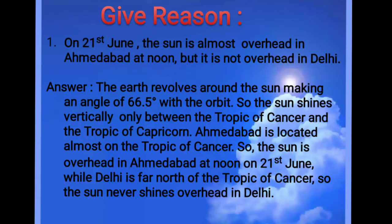When it comes to 21st June, the earth is positioned such that the Tropic of Cancer faces the sun, meaning the sun rays fall vertically on the Tropic of Cancer. Ahmedabad is located on or very near the Tropic of Cancer, so the sun rays shine vertically over Ahmedabad. That is why the sun is overhead in Ahmedabad at noon on 21st June.